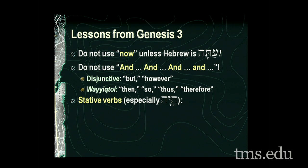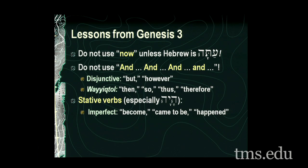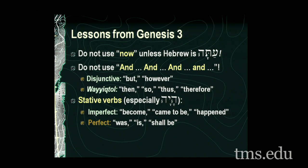Stative verbs: when you come to stative verbs like 'hayah' or 'yare' — 'he was afraid' — or 'kadash,' 'to be holy,' remember that statives must be translated as 'become something' if in the imperfect: 'become,' 'came to be,' or 'happened.' Whereas in the perfect it's the idea of 'was,' 'is,' or 'shall be.' The imperfect stative is what we call a dynamic stative — it is in process, a state of becoming. The perfect is a state of being: 'was,' 'is,' or 'shall be.'